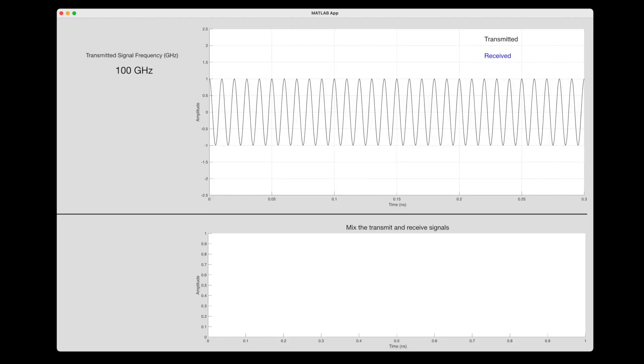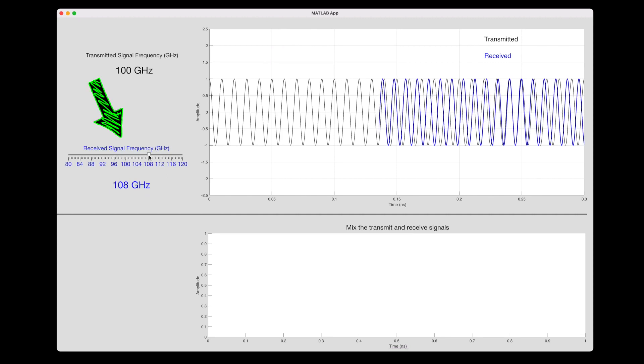But detecting really tiny frequency differences is made much easier by looking at beat frequencies. To show you how it works, I made this simple MATLAB app. The transmit frequency from the radar I'm setting to a hundred gigahertz. The received signal comes back at a different frequency, which I can adjust with this slider. So here I'm setting it to a hundred and eight gigahertz, which means that the object is moving towards the radar.